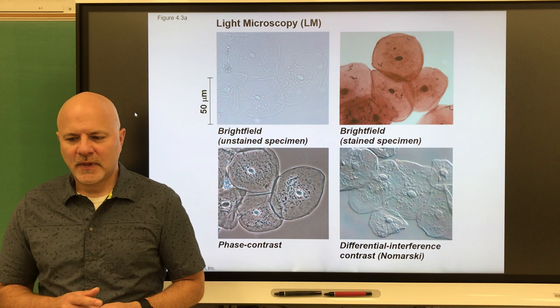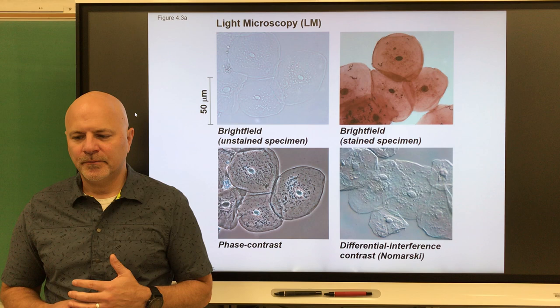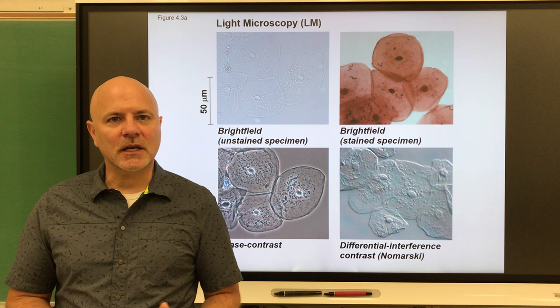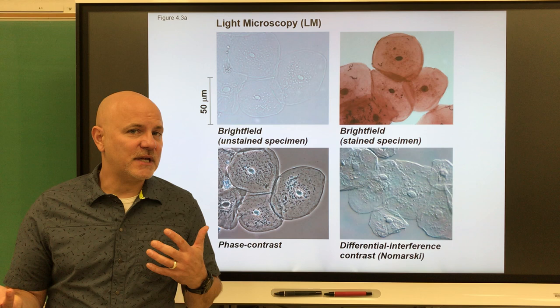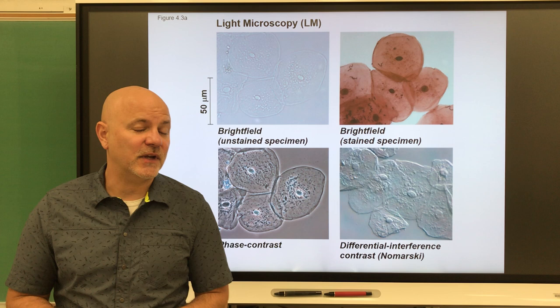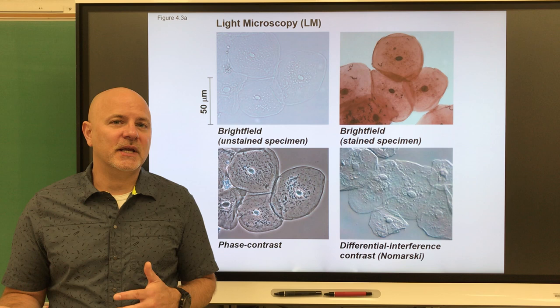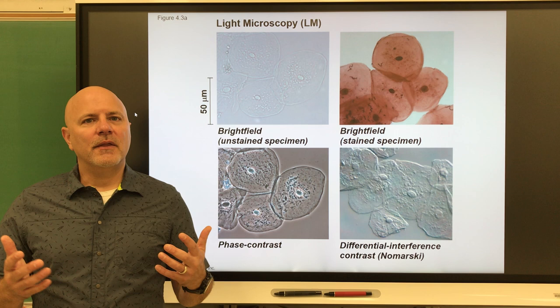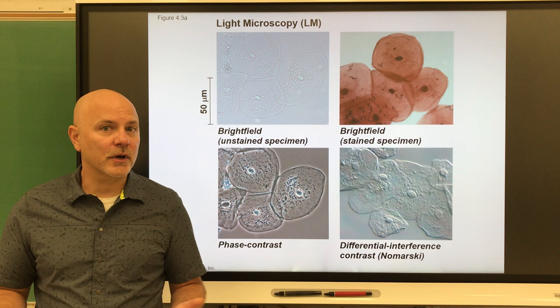Next was Theodor Schwann, a German scientist also in the 1830s, who said all animals are made of cells after examining many different animal tissues. A colleague of his, Matthias Schleiden, also German and also in the 1830s, looked at various plant types and concluded that all plants are made of cells. Under Linnaean classification at the time, saying all animals and all plants are made of cells encompassed all life — fungi were considered plants since they didn't move. This led to cell theory: all organisms are made of cells.